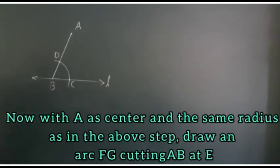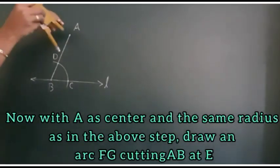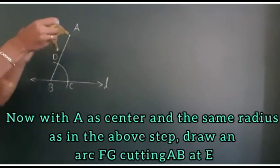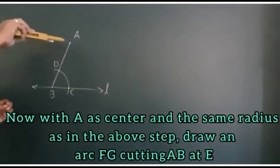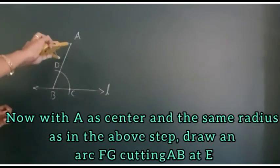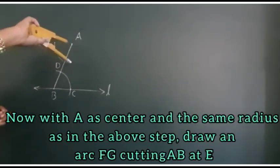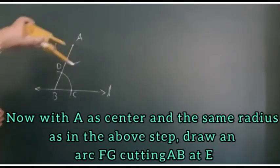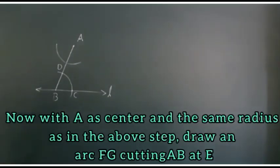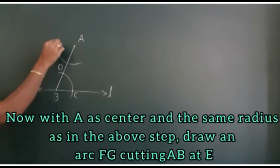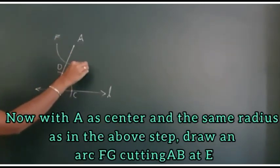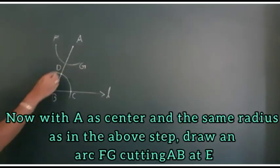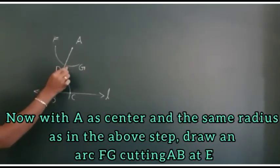Now with A as center and the same radius as in the above step draw an arc FG cutting AB at E. This is arc FG cutting AB at the point E.